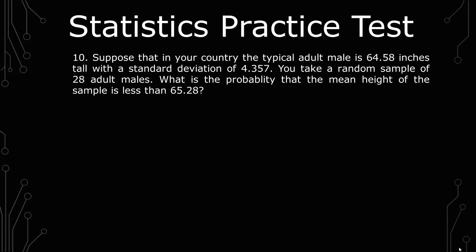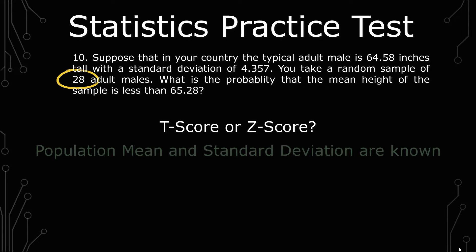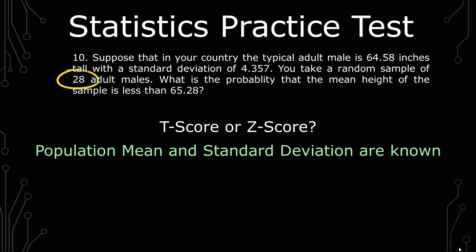The first aspect you want to discern is: are we talking about a T-score or Z-score? What will make people hesitate is the fact that it says 28 adult males, and you have this rule that a lot of people give, where 30 is the benchmark for whether or not you use the T or Z distribution. But there's an additional aspect that needs to be there, which is the standard deviation needs to not be known for the population. But in this case, we know what the standard deviation is for the population, and because we know that, the T-distribution is not appropriate — because the T-distribution, with the degrees of freedom, is trying to account for the fact that it doesn't know the standard deviation.